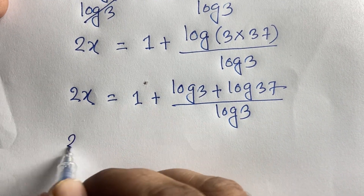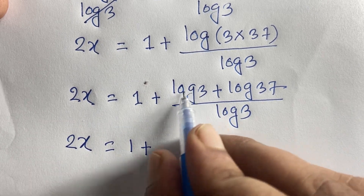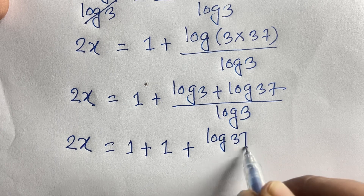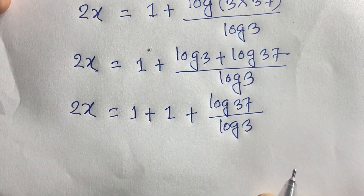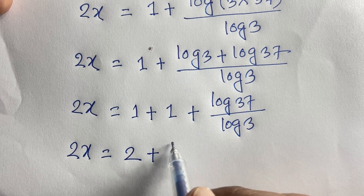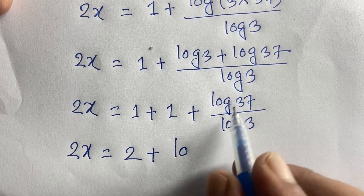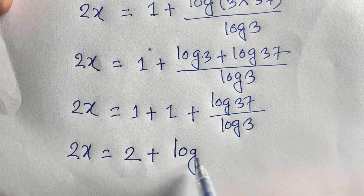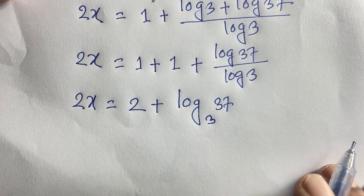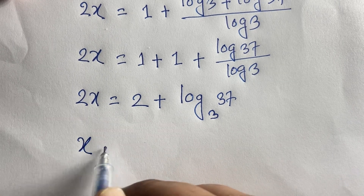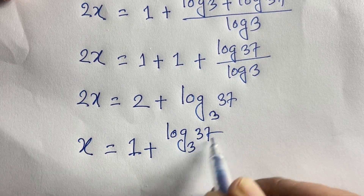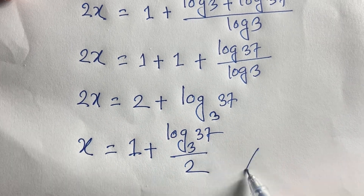Simplifying: 2x = 1 + (log 3 / log 3) + (log 37 / log 3) = 1 + 1 + log₃37 = 2 + log₃37. Dividing both sides by 2, the final answer is x = 1 + (log₃37 / 2).